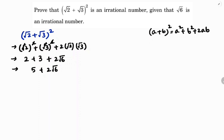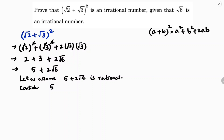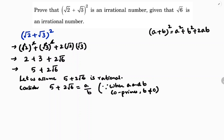Now we need to prove that 5 + 2√6 is an irrational number. We'll use proof by contradiction. Let us assume that 5 + 2√6 is a rational number. If it is rational, it can be expressed in the form p/q, so let 5 + 2√6 = a/b, where a and b are positive co-primes and b ≠ 0.